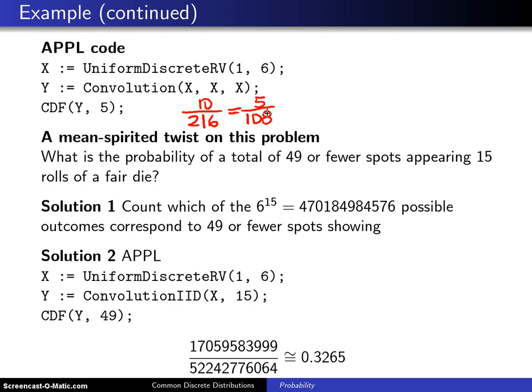Now if you want a mean-spirited twist on this problem where you can't actually list out—well you could, but it'd be a pain to list out all the probabilities—what is the probability of a total of 49 or fewer spots in 15 rolls of a fair die?